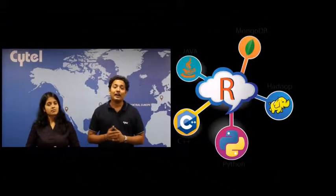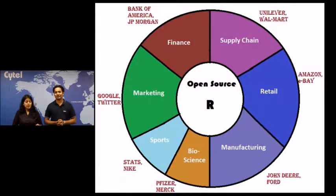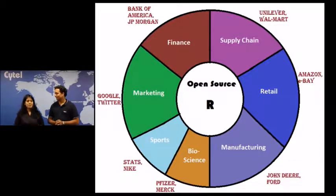The other advantage of using R is the graphical functionalities it offers, which are simply outstanding. Also, today R has around 5,000 packages inbuilt in it, most of which are specific to certain applications. That means you don't have to be a specialized R programmer to start building your own applications. R is also platform independent, meaning you can integrate it with different programming languages and run it on different operating systems. R is used in almost every field — finance, bioscience, marketing, supply chain, retail, management — and in companies as diverse as Google, Merck, Pfizer, Bank of America, and Shell.